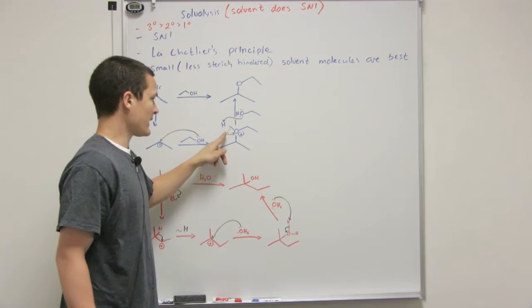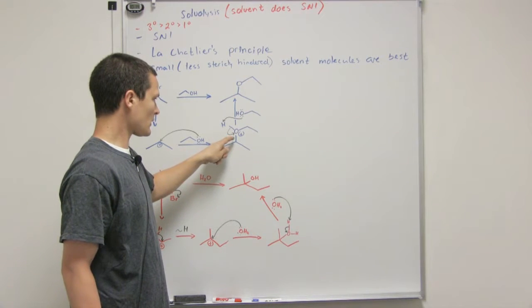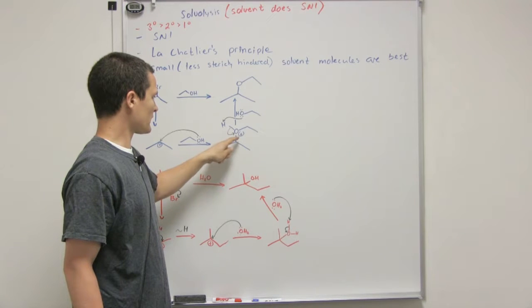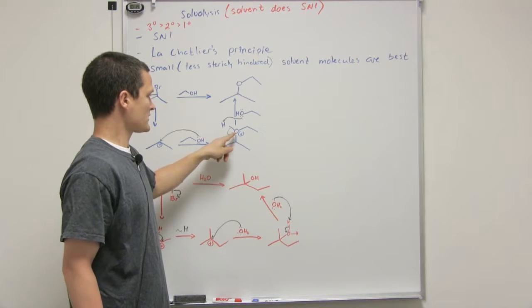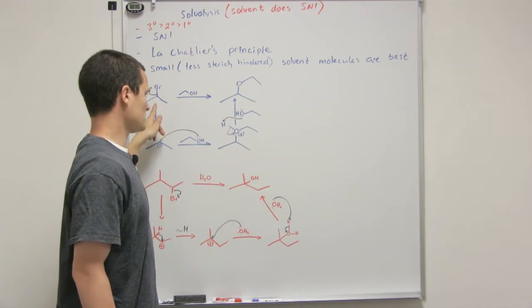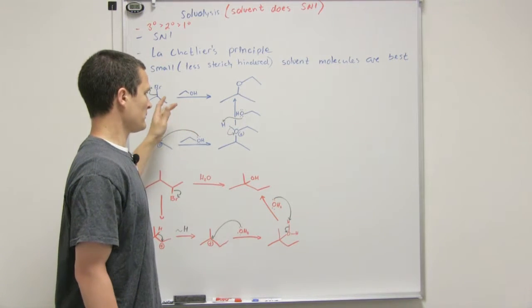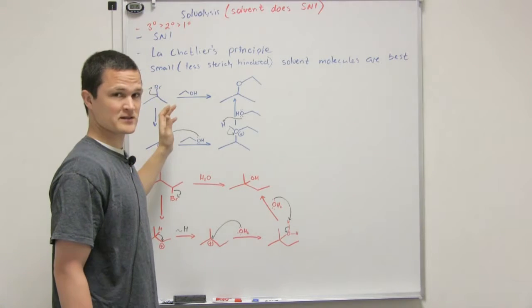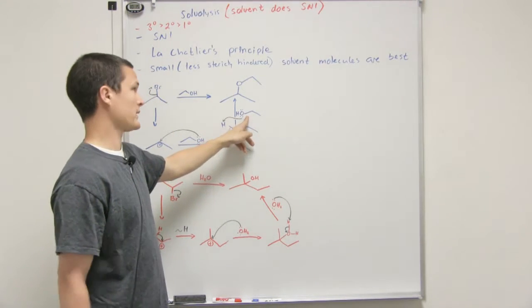When we do that we notice that we get the alkyl oxonium or the oxonium ion form so we want to remove that using the solvent. This would produce an acidic environment after we're done but it's not acid catalyzed or anything so we're actually going to get protonated alcohol when we're done with the mechanism.